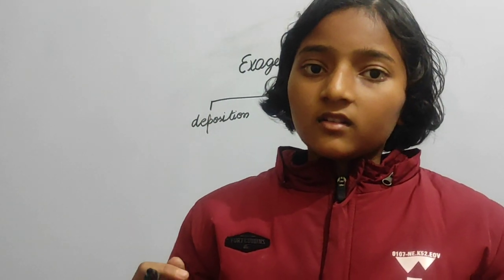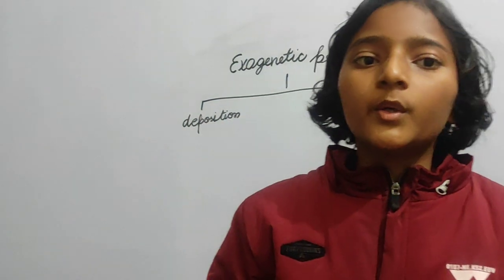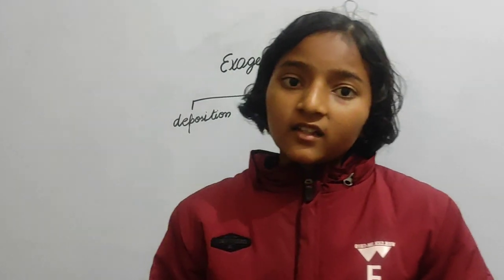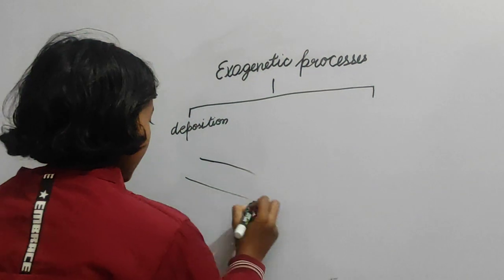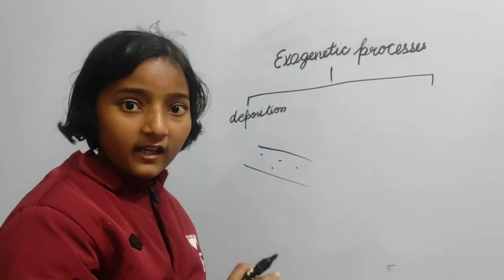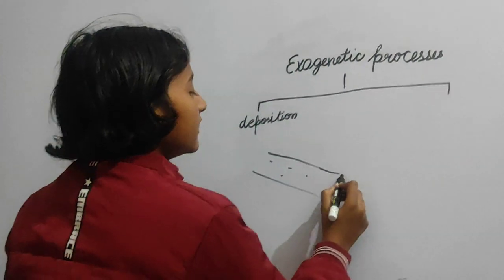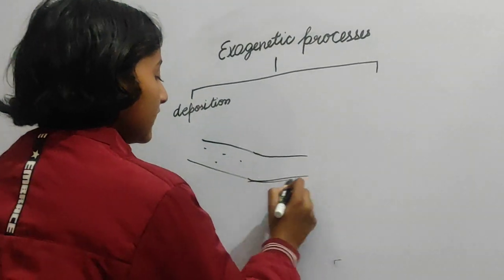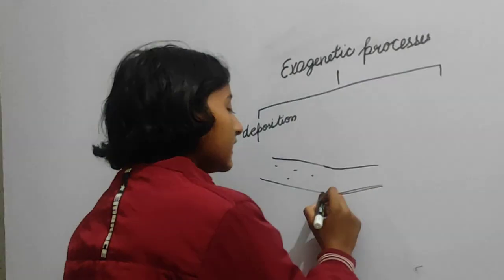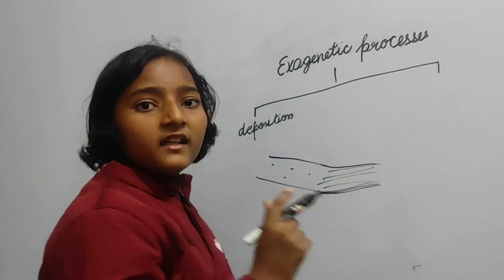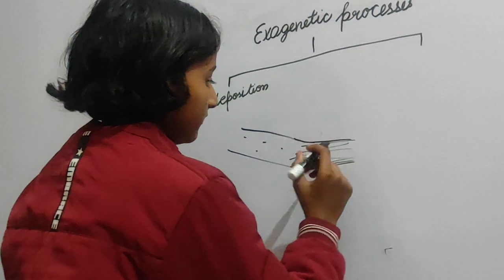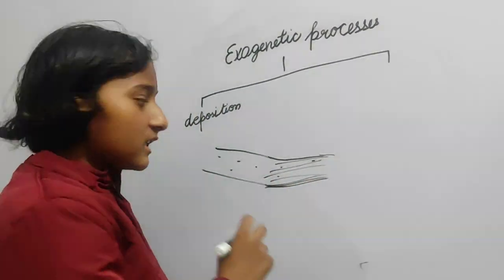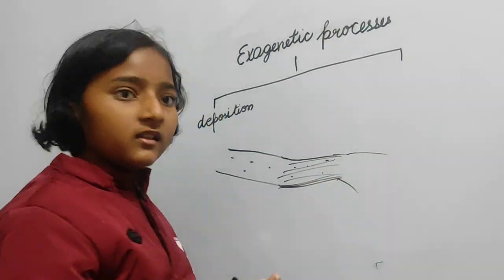How does this deposition take place? When a river flows from a place, it carries some pieces of soil and some pieces of rocks. And if it reaches a lower, plain area, then it will deposit all that silt. Silt is the depositional material that is carried by a river during its flow. It will deposit all the silt here and then fall into the sea.